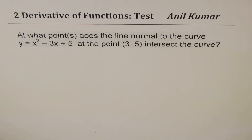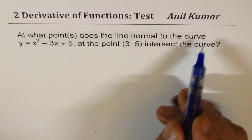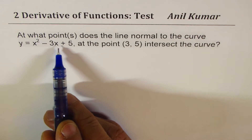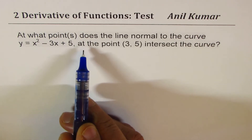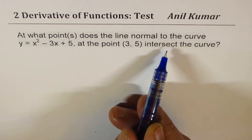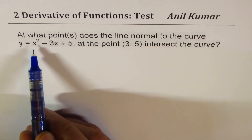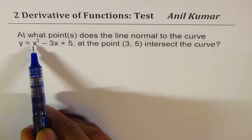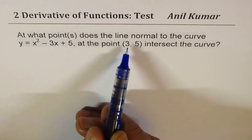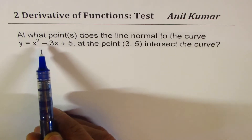I'm Madhul Kumar, sharing with you a few interesting questions on tangents and normals as an application of derivatives. The question here is: at what points does the line normal to the curve x² - 3x + 5 at point (3, 5) intersect the curve? If I substitute 3 into the curve, we get 9 - 9 + 5 = 5, so the point is on the curve.